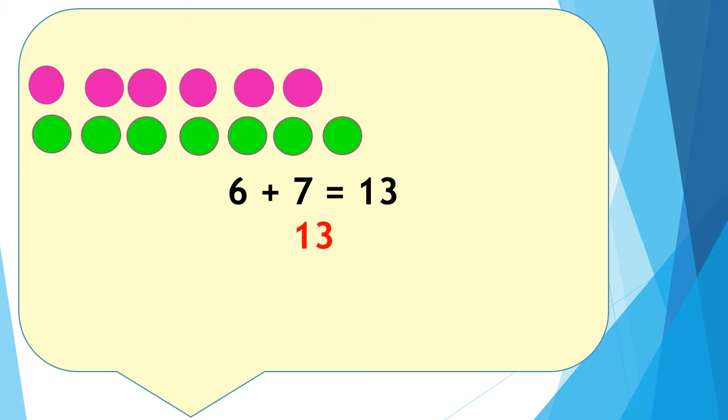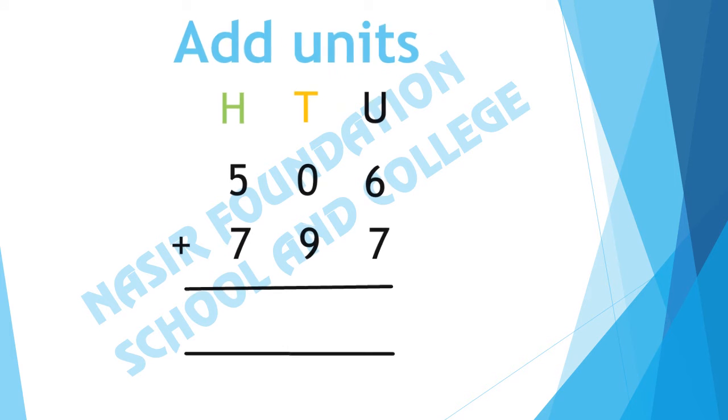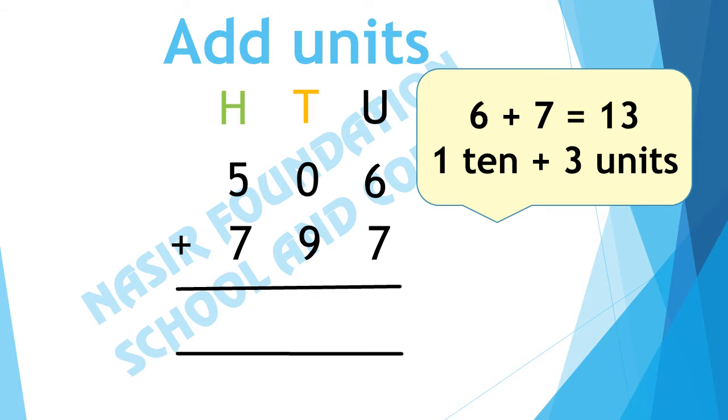There are 6 shapes and in 6 shapes we have to add 7. Counting 1, 2, 3, 4, 5, 6, 7, 8, 9, 10, 11, 12, 13. If we add 6 and 7 we get 13. In 13 there is 1 ten and there are 3 units. We will write 3 in units column and we will carry forward 1 to the tens.